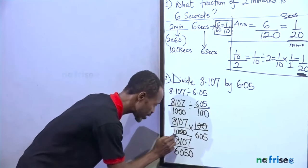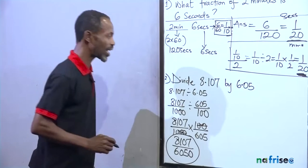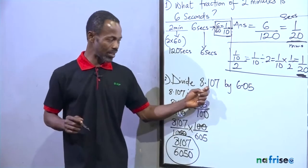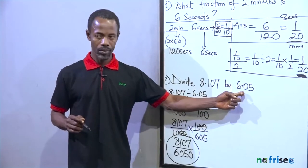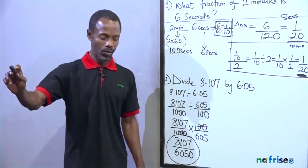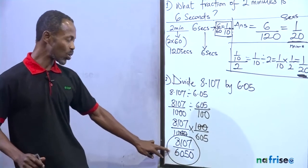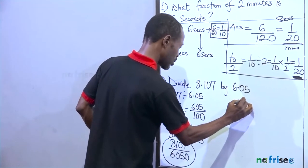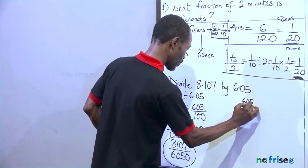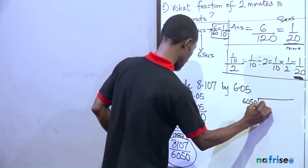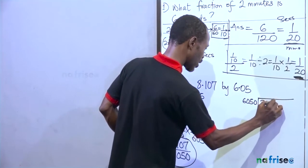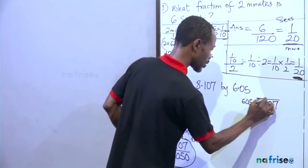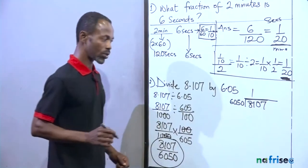So it is this now that is the answer. But because the answer is to be expressed in decimal, the question was given in decimal, the answer must reflect in decimal. You carry this number to your long division. How do you do that? Let's take our long division here. We say 6,050 divided by 8,107. Okay, let's start. Now, 1.